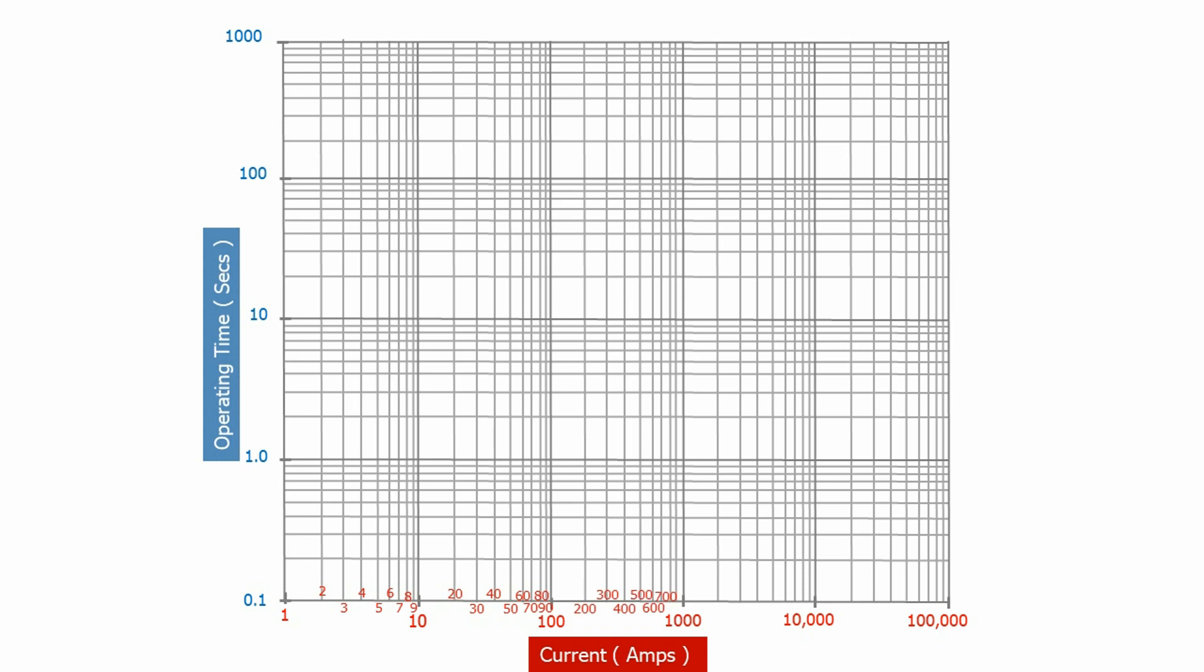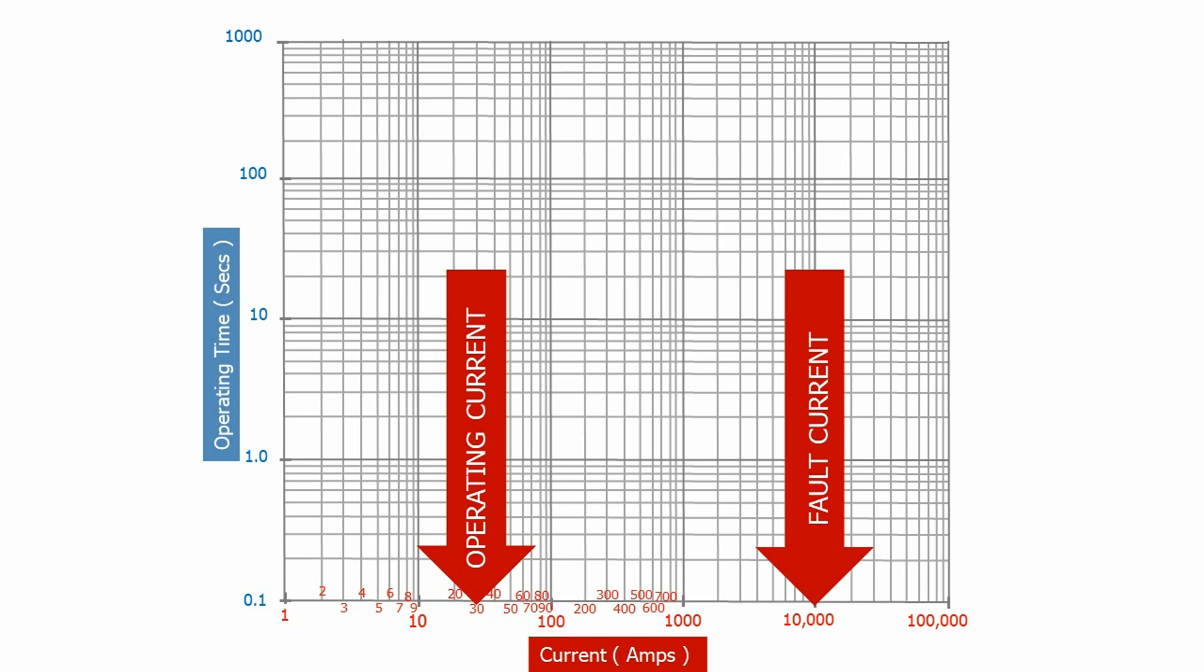Why do we use the logarithmic graph? Well, the current that we want to study has a huge range. The normal operating current for a 60 amp circuit may be 10, 20 or 30 amps, but when we get a fault the current magnitude can increase to 10,000 amps and we want to see this full range of current on the same graph. The only way we can do this is to use a logarithmic scale.